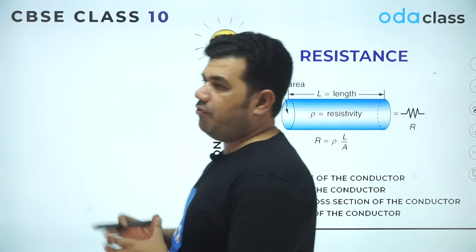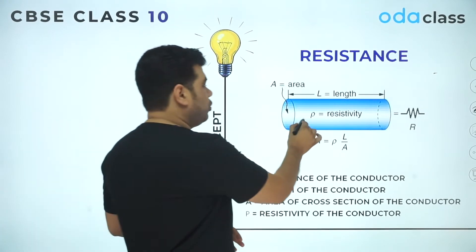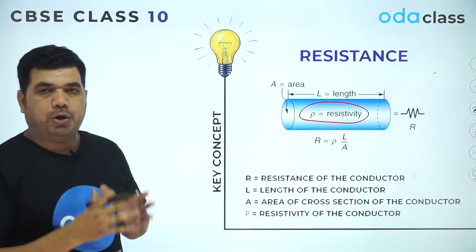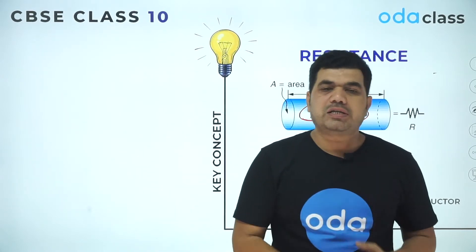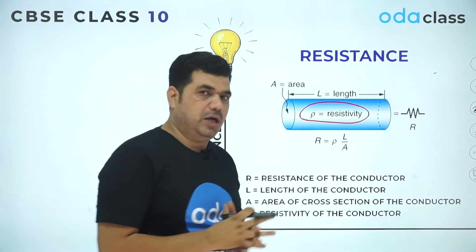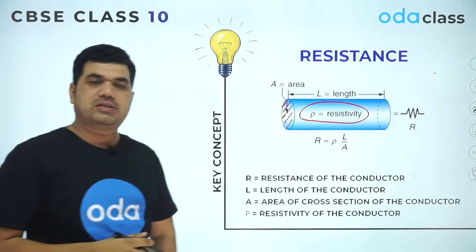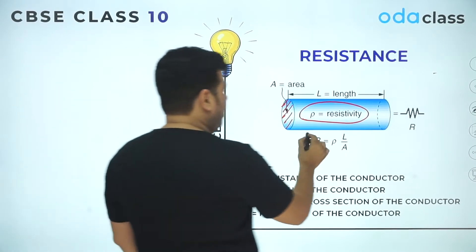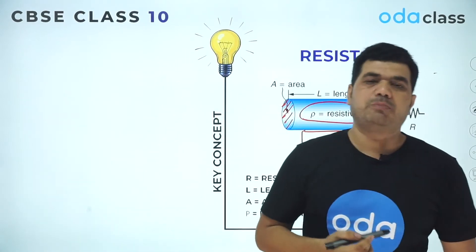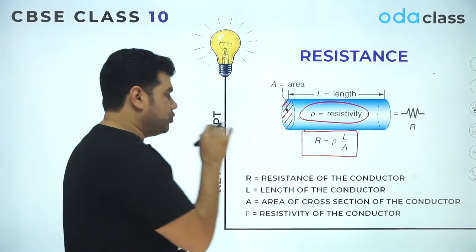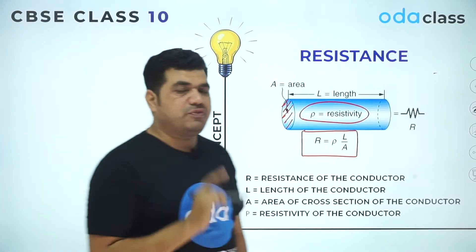Mathematically, how can you calculate resistance? If there is a conductor having resistivity ρ, this is a property of a material and it is independent of size and shape of the conductor. Here l is the length and A is the cross-sectional area. The formula for resistance is R = ρl/A — resistance is directly proportional to length and inversely proportional to cross-sectional area. Remember: resistivity ρ is independent of size and shape.